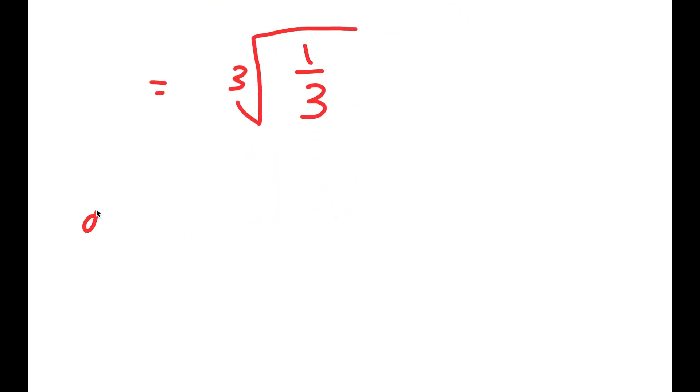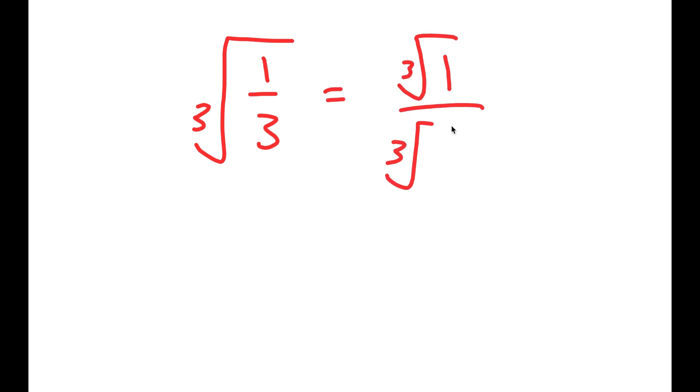And if I have the nth root of 1 over a, this is the same thing as the nth root of 1 over the nth root of a. So the third root or the cube root of 1 over 3 is equal to the cube root of 1 over the cube root of 3.